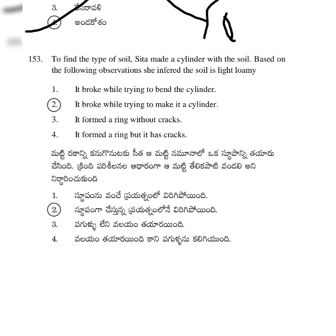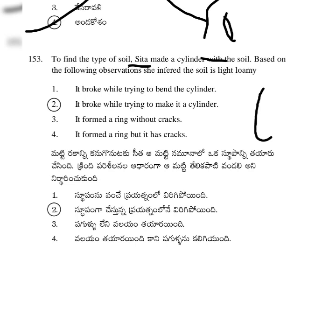To find the type of soil, Sita made a cylinder with the soil. Based on the following observations, she inferred the soil is light loamy.